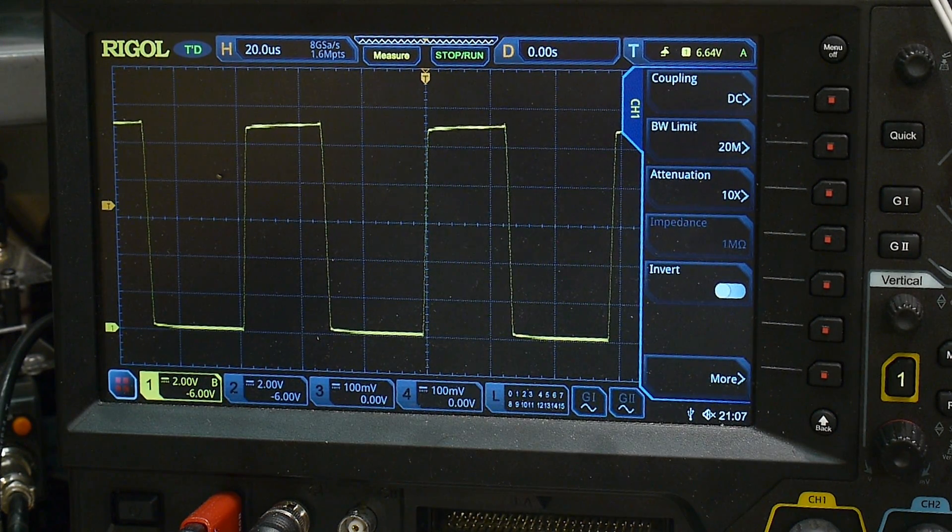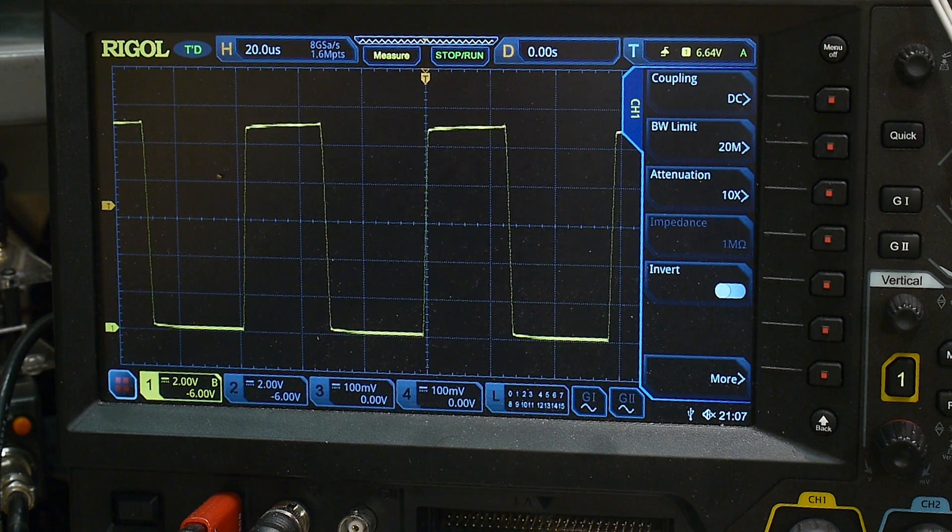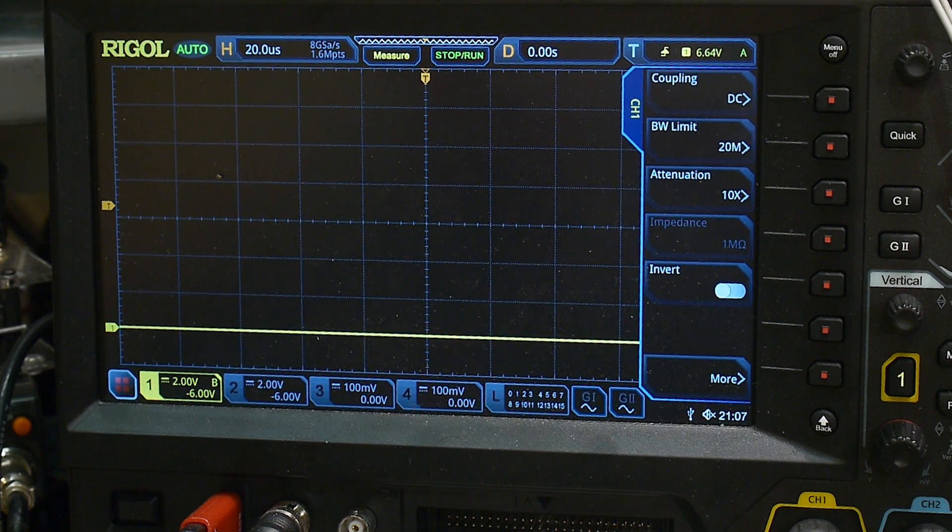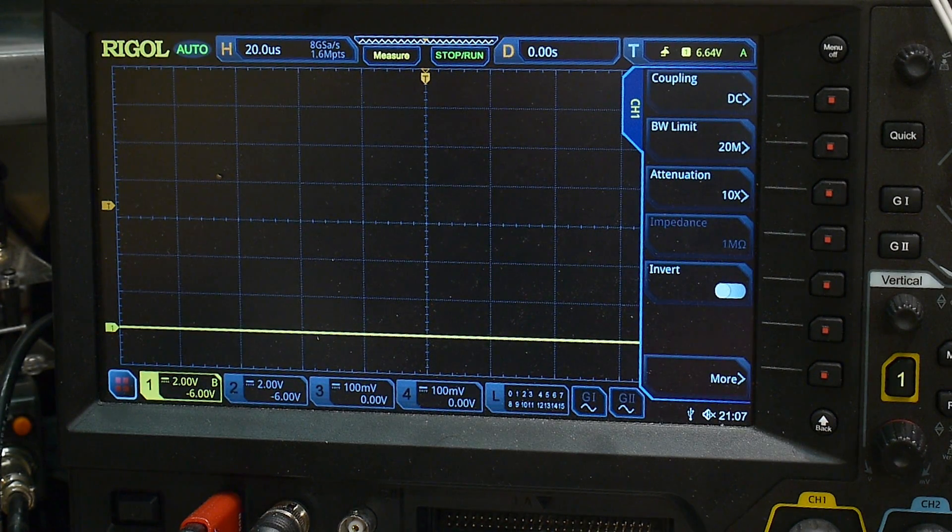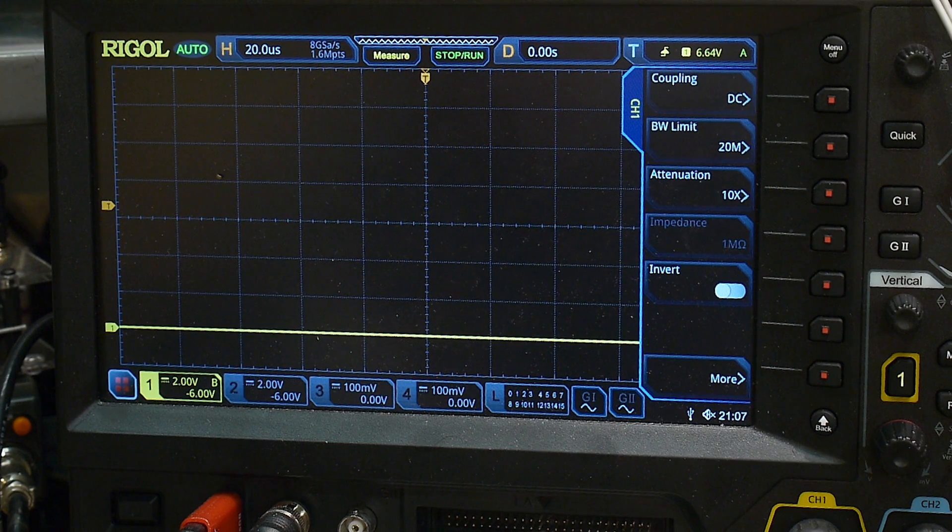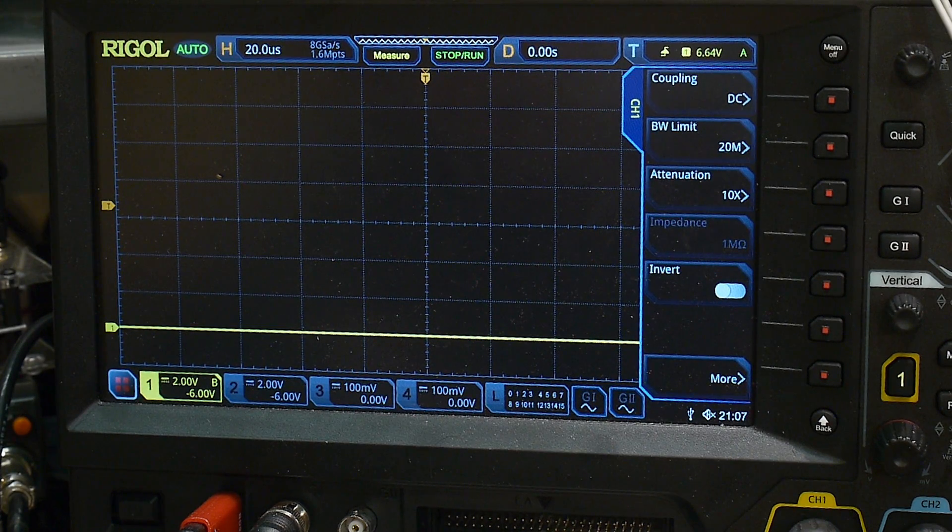We start with an oscillator, we round it off, and then we square it up again. That's our four op amps doing their thing. Now I am going to remove the op amp and put in the LM324 and we'll see how that does. They've been compatible, so you can just pop it right in.